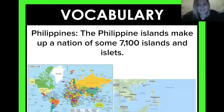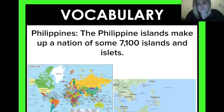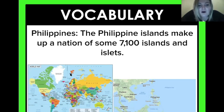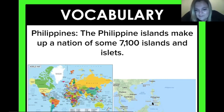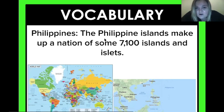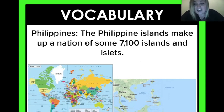We need to talk about where in the world the Philippines are, because we don't live there. We live all the way over here, and we have to hop all the way over here to the Philippines. I even did a zoomed-in version right here — if you see right here, it says the Philippine Sea, and that is right here in this zoomed-in picture. All these islands are the Philippine islands, which make up a nation of about 7,000 islands — and that's pretty crazy.